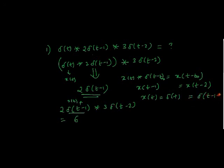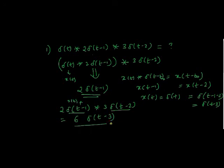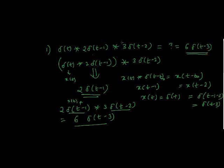Since x(t) is δ(t−1), it becomes δ(t−1−2), which is δ(t−3). So δ(t−1) convolved with δ(t−2) equals δ(t−3). Therefore, the final answer is 6·δ(t−3). That is how we apply these properties. We will solve a few more examples in the next video. Thank you.